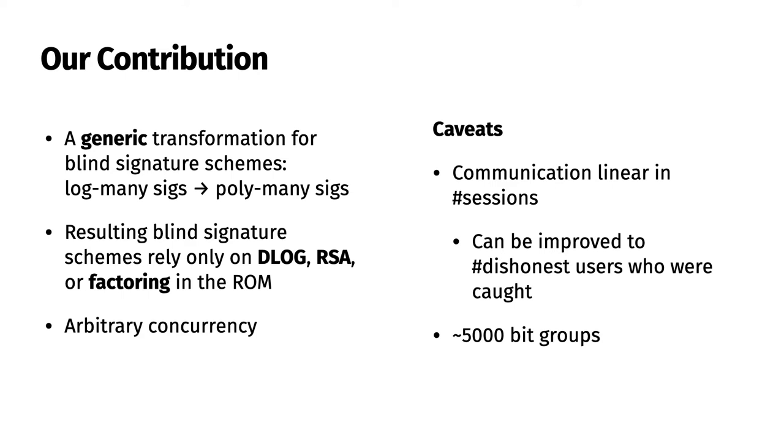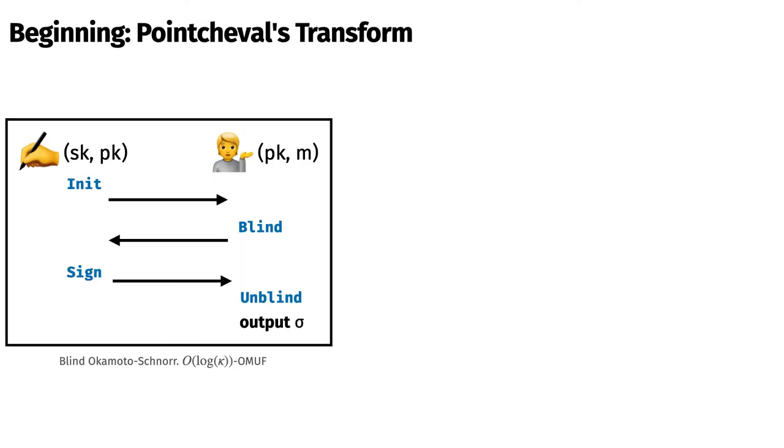To begin describing our transformation, we start with a transformation due to Poincheval. We start with an ordinary three-round blind signature scheme. In Poincheval's case, it is the blind Okamoto-Schnorr scheme. The signer initiates the protocol, the user blinds their input, sends it to the signer to be signed, and then unblinds the signer's output.